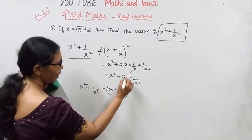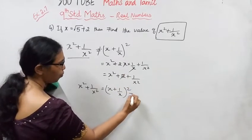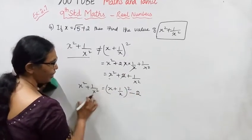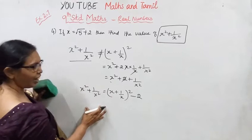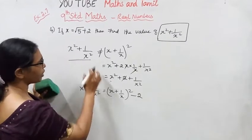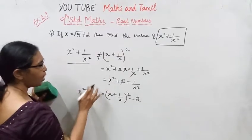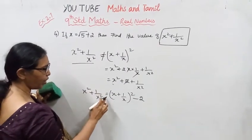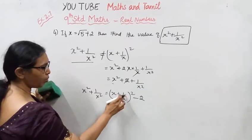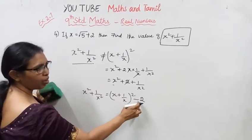So the value is x² + 1/x² = (x + 1/x)² minus 2. Now I will follow another method to solve this problem.